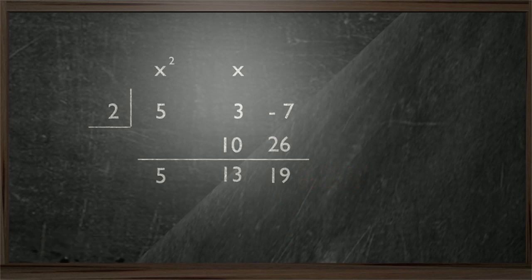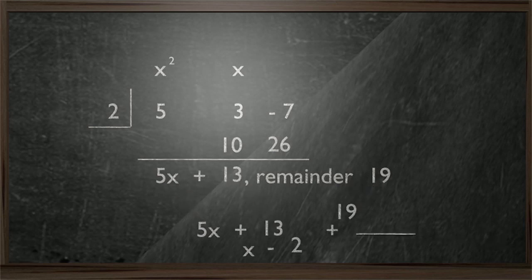And we can read off the result. So the last term is our remainder, 19. And the other two terms give us our quotient in descending order. That means this term must be a constant. And this term must be the coefficient of the X term. And so we can express our quotient as... And remember, we can always express our quotient and remainder by expressing the remainder as a fraction over the original divisor, X minus A.